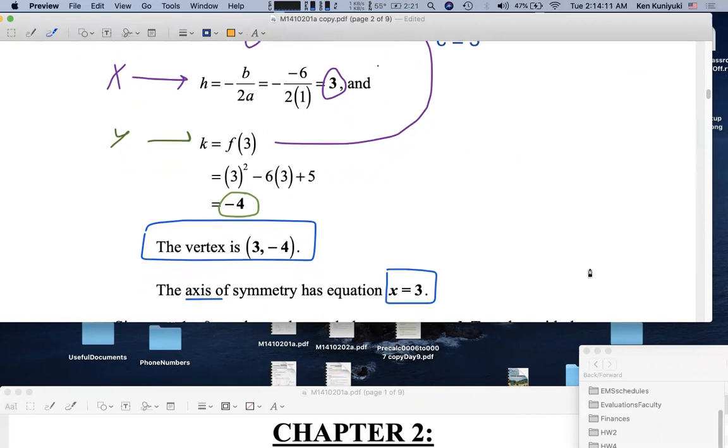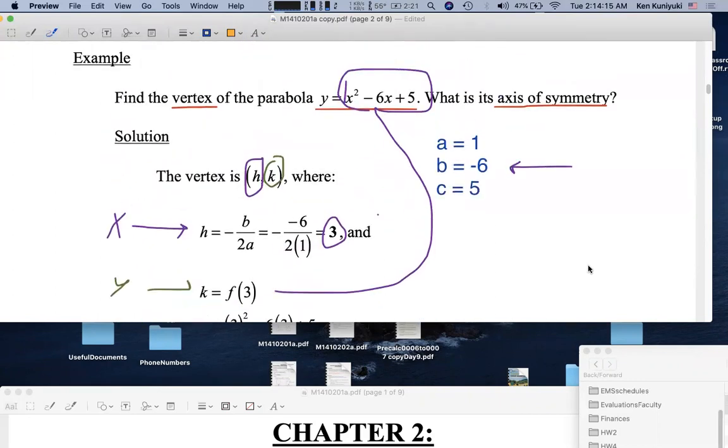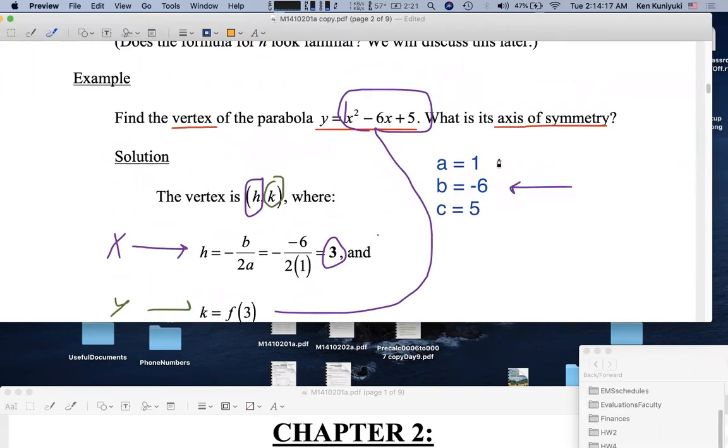And by the way, here's another important piece of information. A is positive. It's positive 1. What does that tell us about the parabola? It opens upward. In fact, it has the same basic shape as y equals x squared.